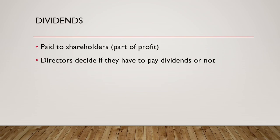Dividends are paid to shareholders and are part of the profit. It is a return to the shareholders for the money they invest in the business. The return for shareholders is called a dividend, and it is taken out of the profit. The directors decide whether to pay dividends and what percentage to pay.